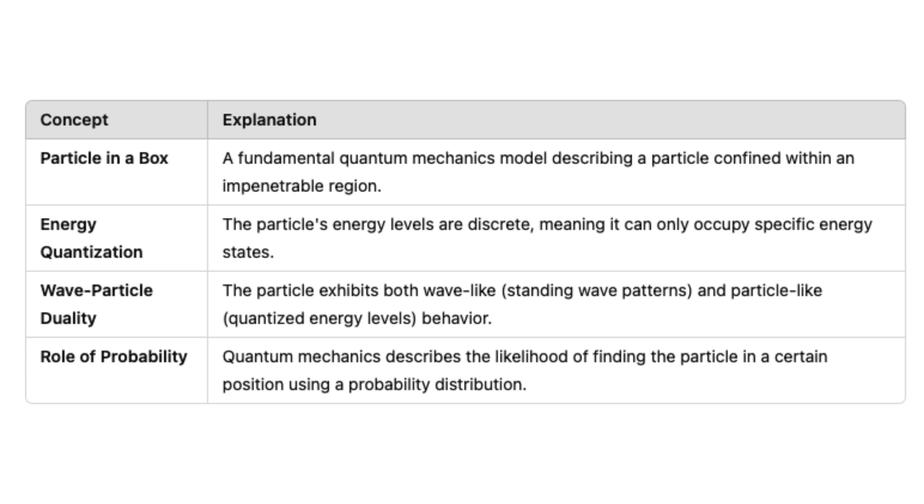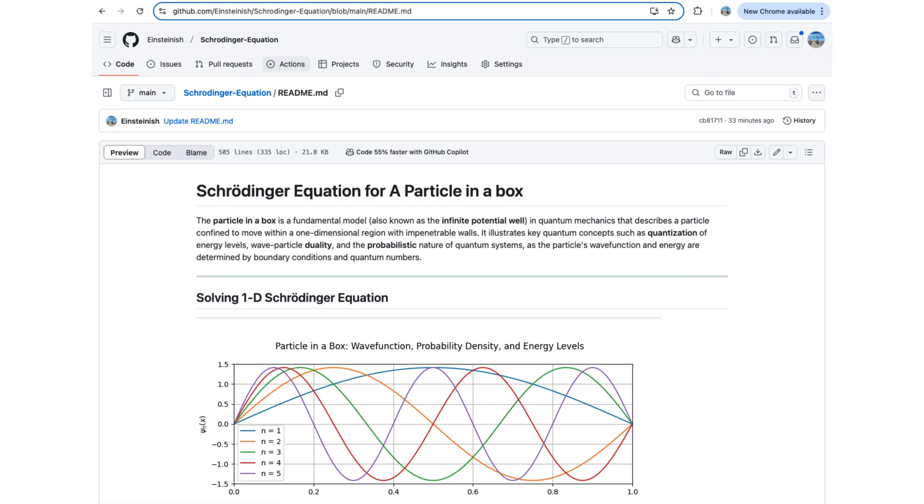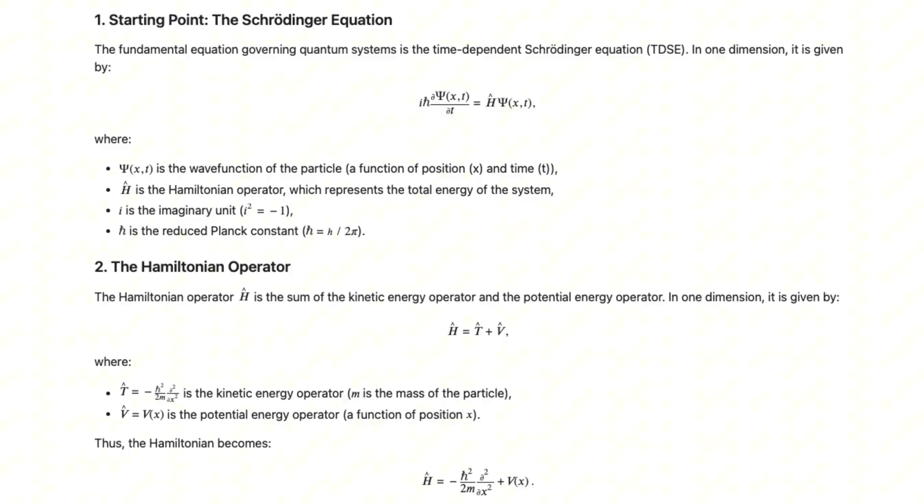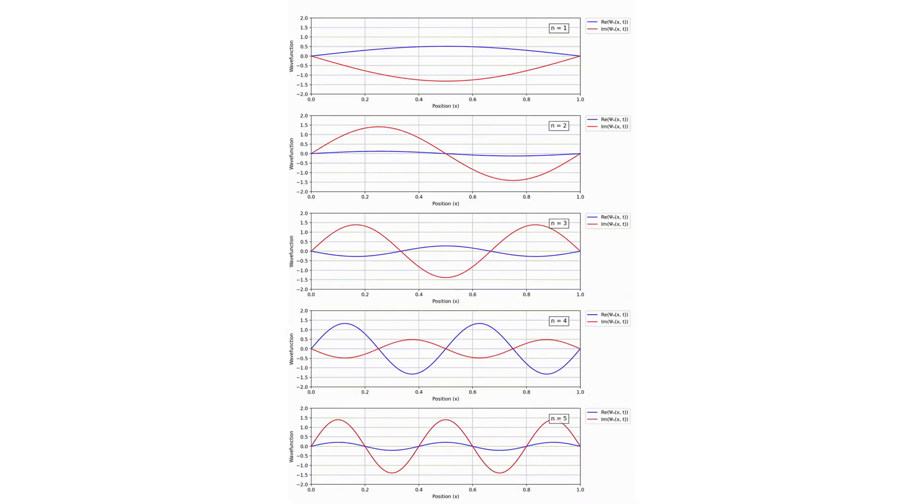The particle-in-a-box exhibits particle-like properties such as discrete quantized energy levels along with the standing wave pattern. I've created a comprehensive GitHub repository that walks you through solving the Schrödinger equation step-by-step. You'll find detailed mathematical explanations, Python code to solve the equation yourself, and visualizations and animations that bring quantum concepts to life. This isn't just theoretical.